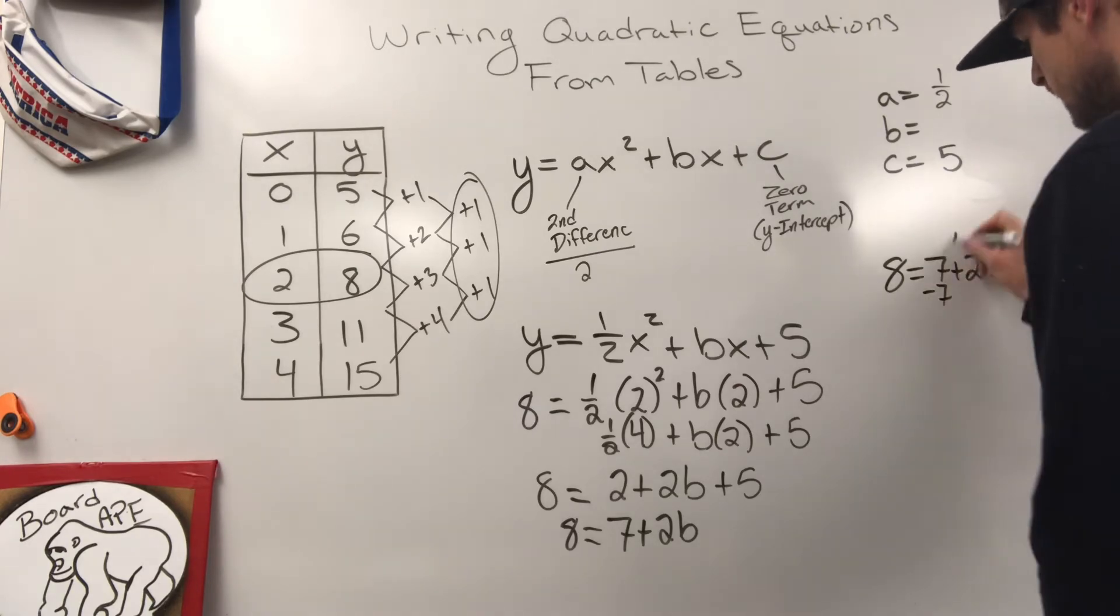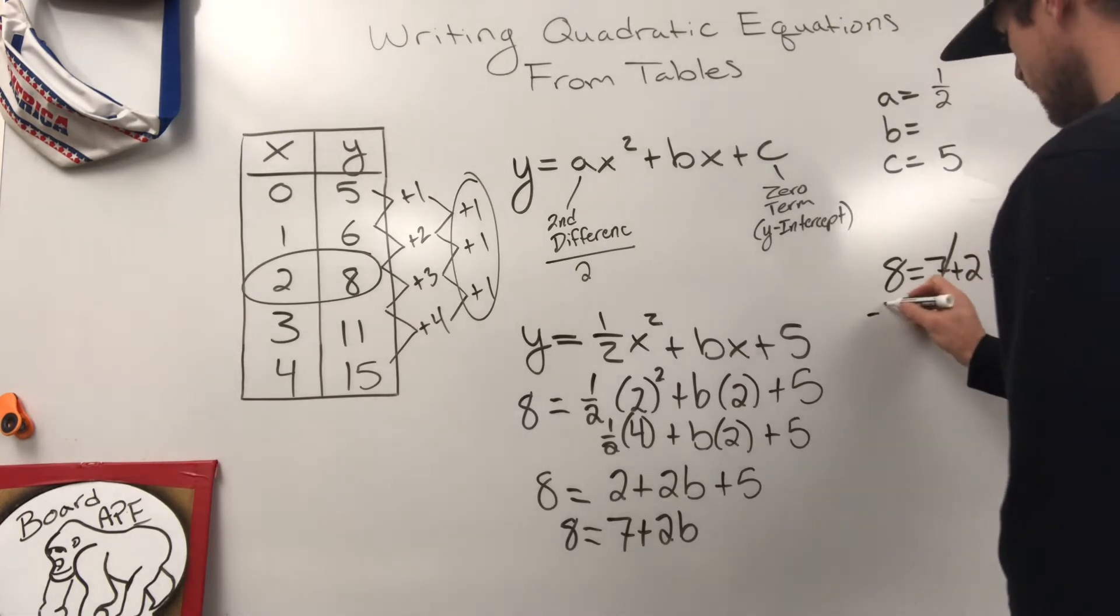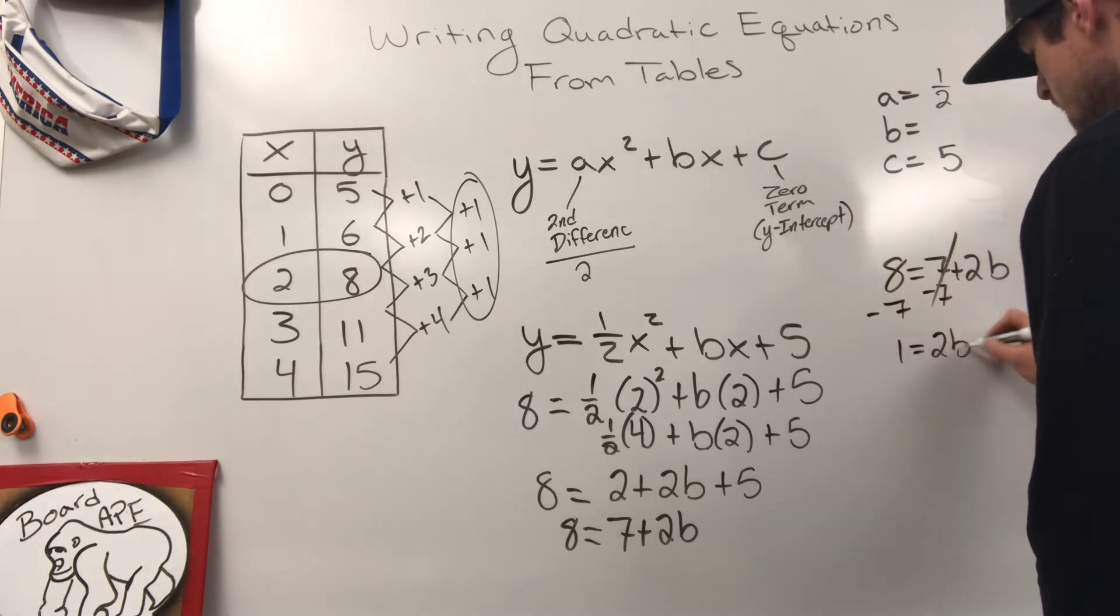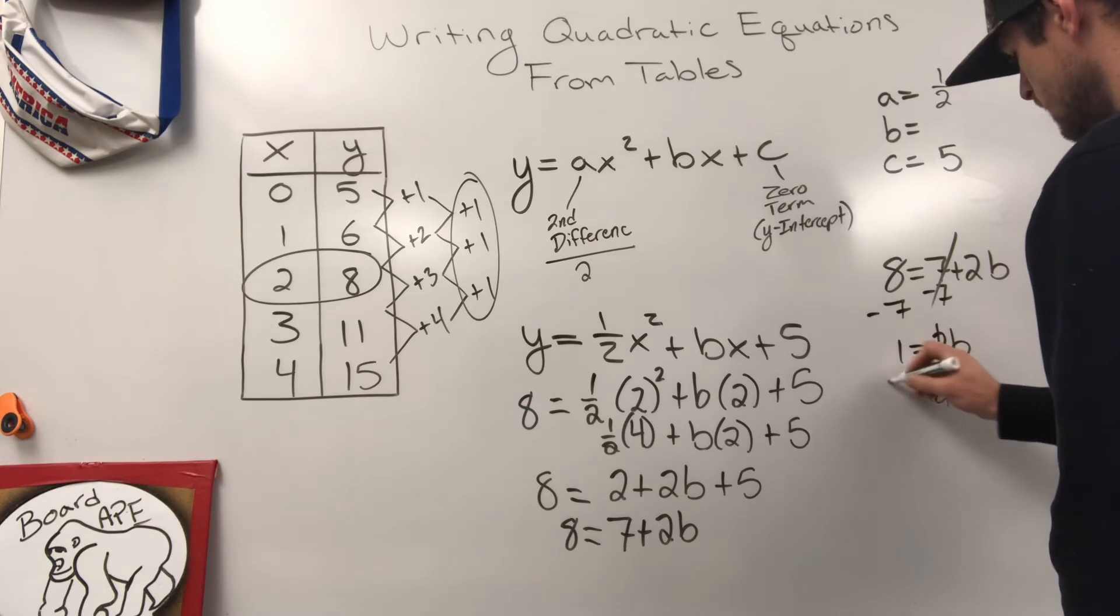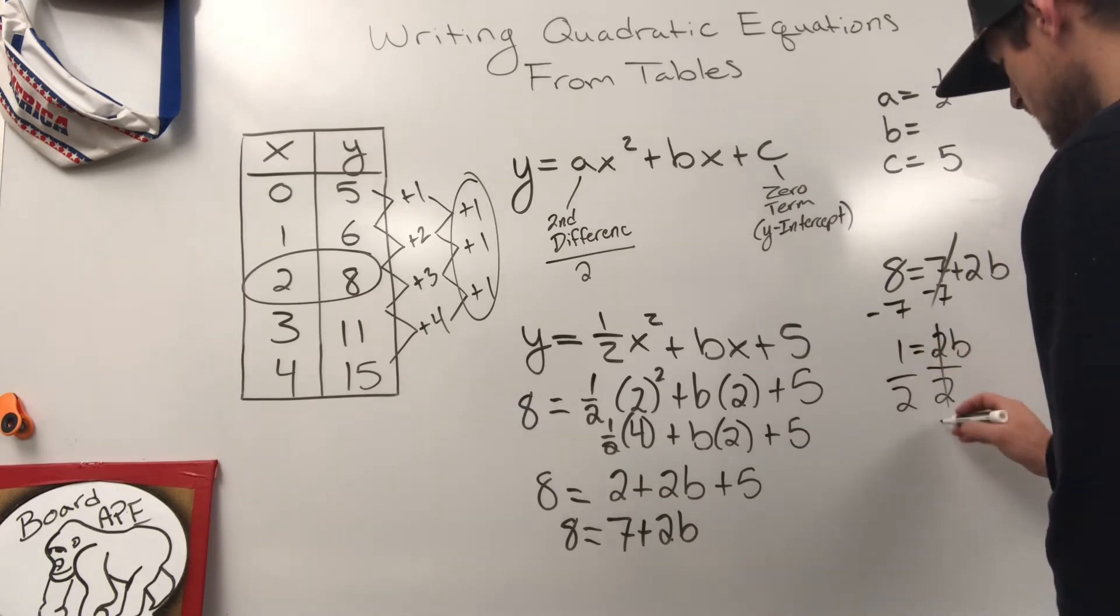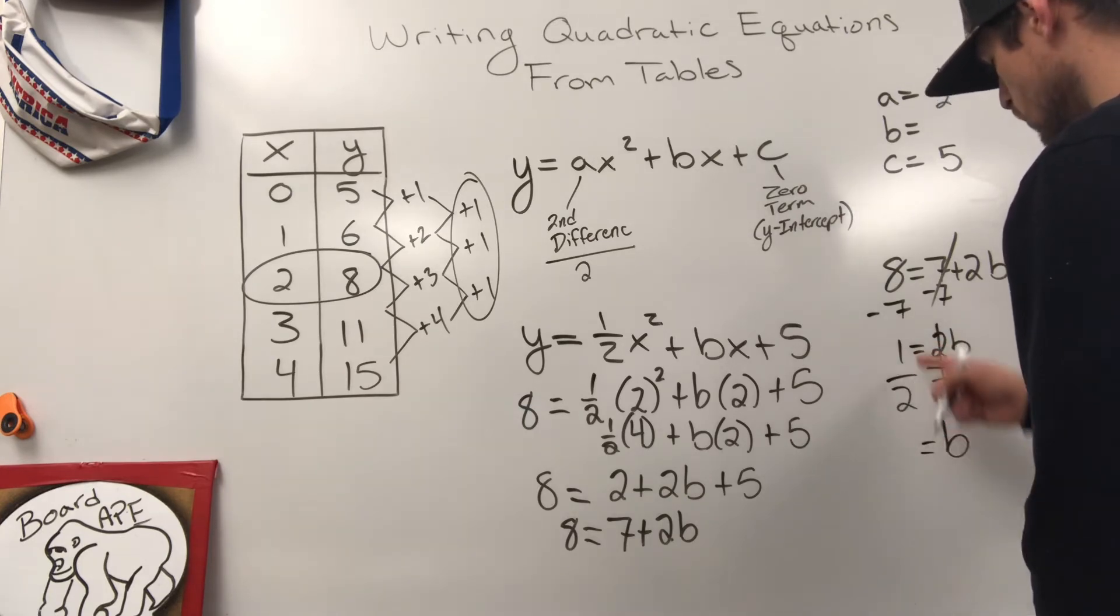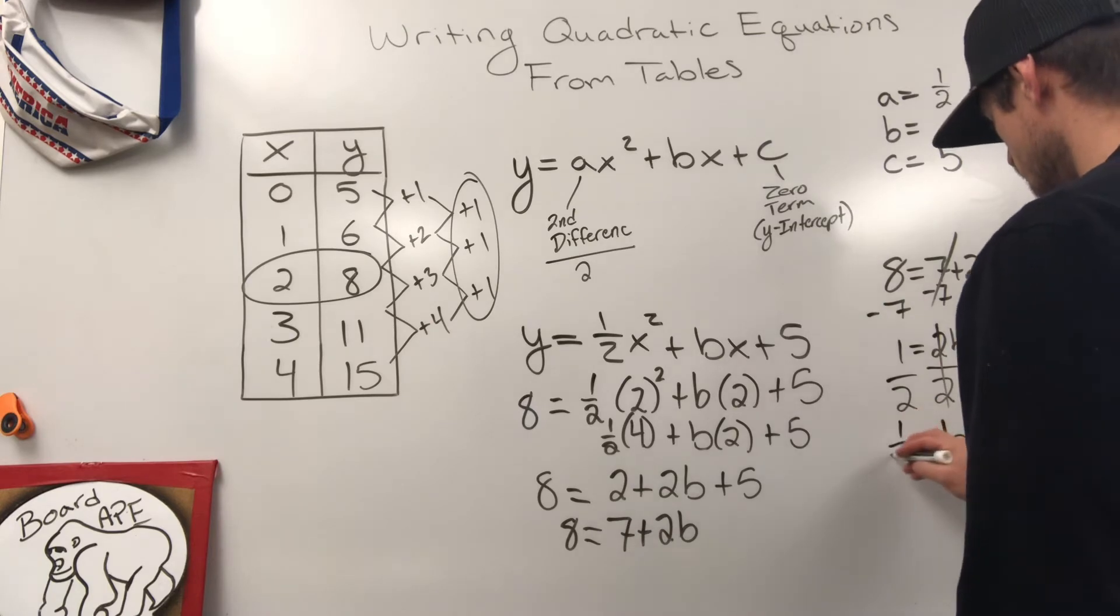Eight equals seven plus two B. Take away the seven, cancels. Take away the seven, eight minus seven is one. One is equal to two B. Divide by two, divide by two. B is equal to one over two, or one half.